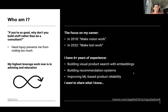The first question might be: if you're so good at this, why don't you just build stuff rather than be a consultant? Unfortunately, I have a hand injury now, which really prevents me from writing a lot of code. That means I wouldn't be in a good position to start or join a company. So the highest leverage work I can do is advising and education. Since 2022, my focus has pivoted to make text work, and not much has changed — visual search with embeddings, recommendation systems, improving product reliability. These are all things I built my career on, and now we're applying those same skills to RAG.